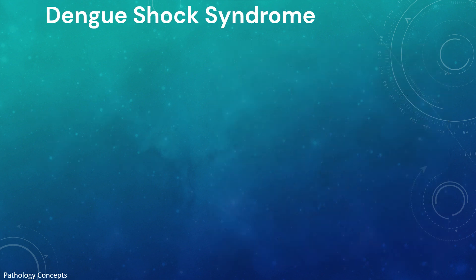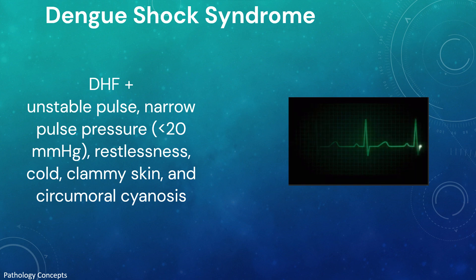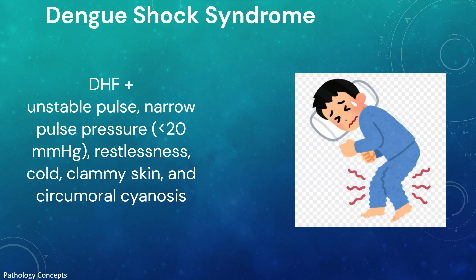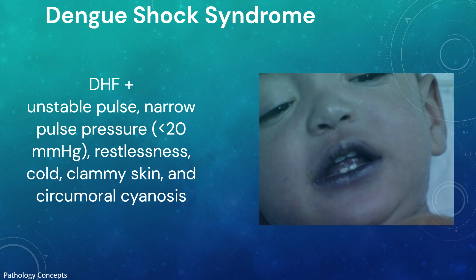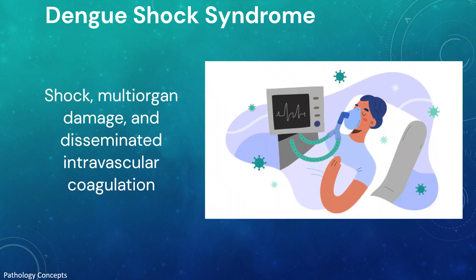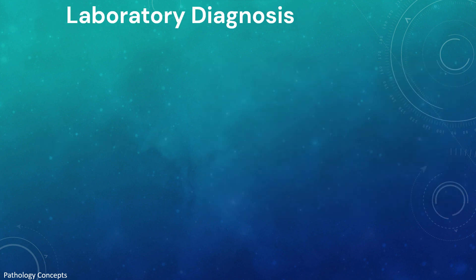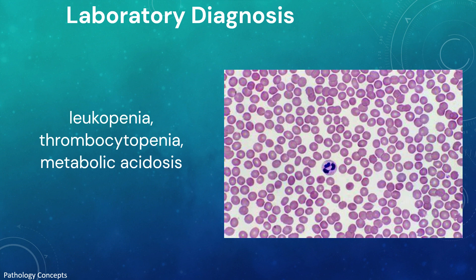Dengue shock syndrome is defined as dengue hemorrhagic fever accompanied by unstable pulse, narrow pulse pressure, restlessness, cold and clammy skin, and circumoral cyanosis. Progressively worsening shock, multi-organ damage, and disseminated intravascular coagulation account for a high mortality rate associated with DSS. The patient promptly recovers with supportive therapy.